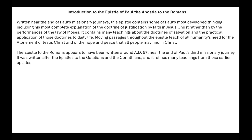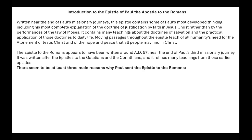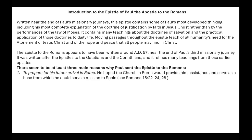The epistle to the Romans appears to have been written around AD 57, near the end of Paul's third missionary journey. It was written after the epistles to the Galatians and the Corinthians, and it refines many teachings from those earlier epistles. There seem to be at least three main reasons why Paul sent this epistle. Number one: to prepare for his future arrival in Rome.